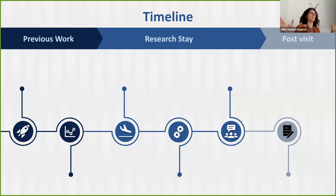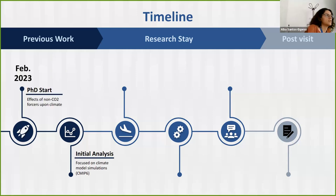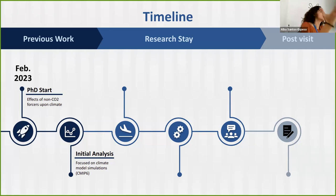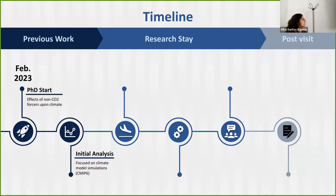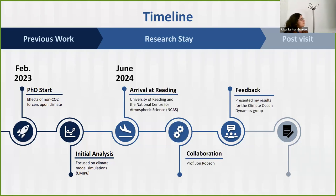Just to put it into context, I'm going to give a timeline of what's been my research. In February of last year, I started my PhD. The title of the thesis is Effects of Non-CO2 Forces Upon Climate. What we started doing was working on output from semi-pistic simulations — model data — to try to isolate the effects of these species. Then in June of this year, I went and did a research stay at Reading, working with the University of Reading and the National Center of Atmospheric Sciences, NCAS.